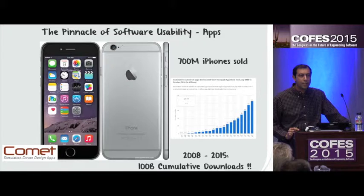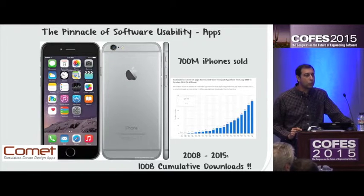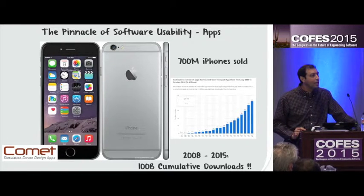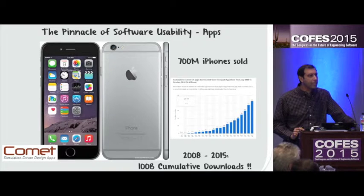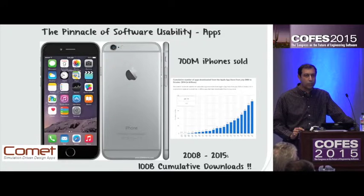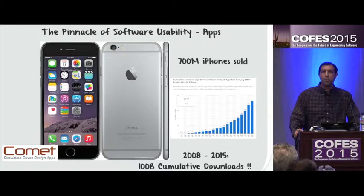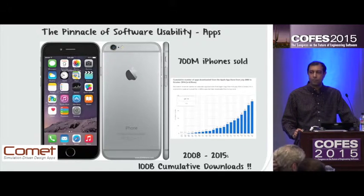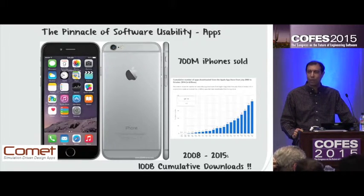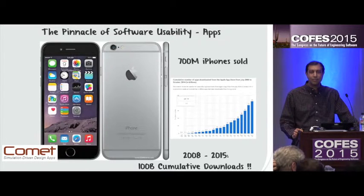And then now to the pinnacle of software usability: apps. There have been 700 million iPhones sold. Between 2008 and 2015, 100 billion cumulative app downloads — that's a B, billion. Apps to do absolutely anything. There are well over a million apps just for the iPhone. Anyone and everyone taps into an app to get certain things done quickly, easily, and it's fun.